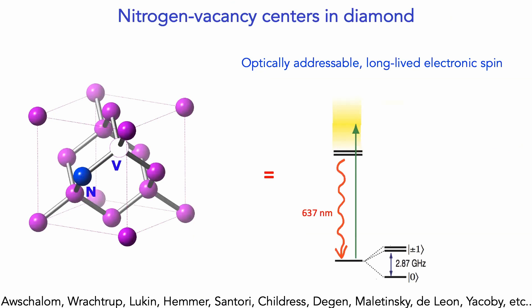Let me first give you some background on the defect center of choice in our lab, which is the nitrogen-vacancy center in diamond. Diamond is a crystal of carbon. If one removes one of the carbon atoms and replaces it with a nitrogen atom, and right next to the nitrogen atom leaves a vacancy — kicking the carbon out but not replacing it — one ends up with the nitrogen vacancy complex. This nitrogen vacancy center is an atomic-like structure housed inside a solid-state matrix that marries some of the advantages of atomic physics and solid-state physics.